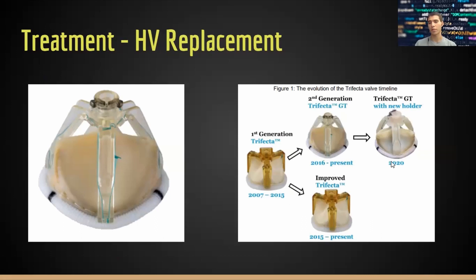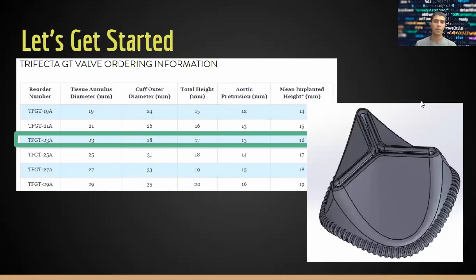Today we'll be modeling something close to the 2020 design. It does not include the new holder for the heart valve — the holder allows it to retain its shape since the valve is composed of different tissues sewn together. This information is available online with the different specs, and this will be the model I'll be designing. From here, let's jump over to SolidWorks.